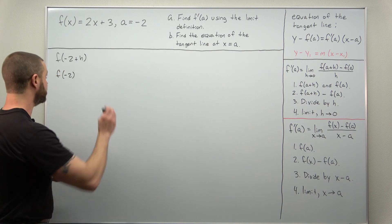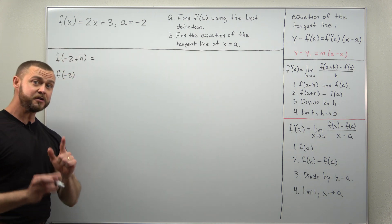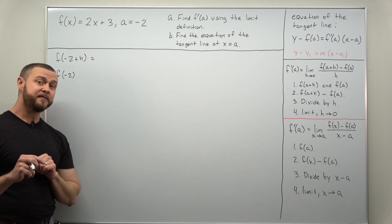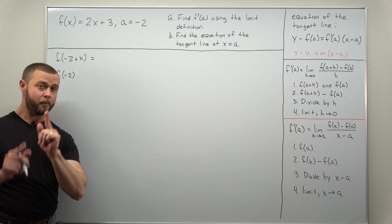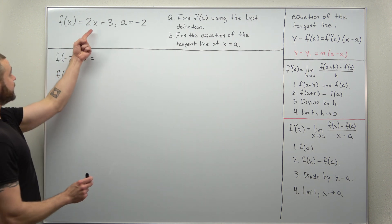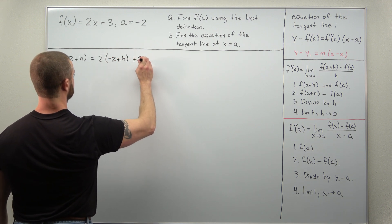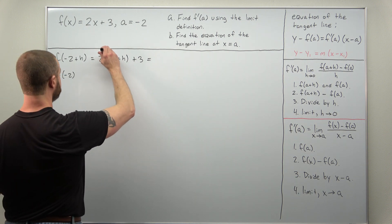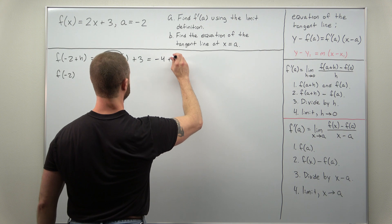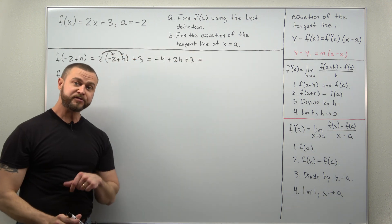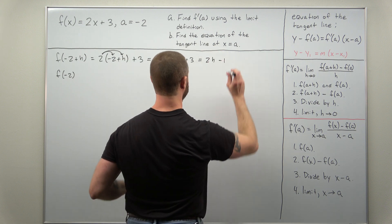Let's do the hard one first. What we're doing is replacing all x's everywhere in the function with negative 2 plus H. We're going to take our function and replace x everywhere with negative 2 plus H. We can simplify by distributing the 2 through the parentheses, giving us negative 4 plus 2H, and then the plus 3 at the end. We have like terms to combine: negative 4 plus 3 is negative 1. So we simplify this to 2H minus 1.